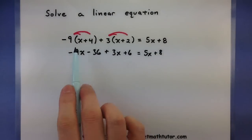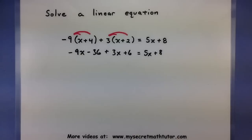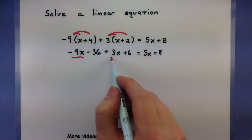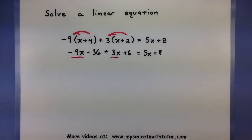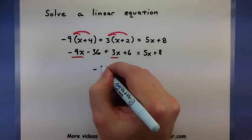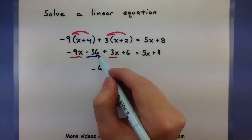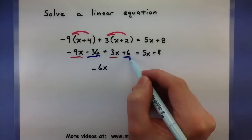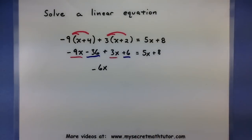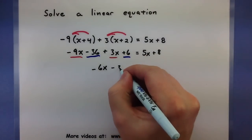So notice, now I can take this guy, combine it with the 3x, and eventually move it to the other side. Let's combine the terms that we can. So I see an x and an x, so that'll be a negative 6x. Looks like I also have a negative 36 and a positive 6, so we'll put those guys together, negative 30.